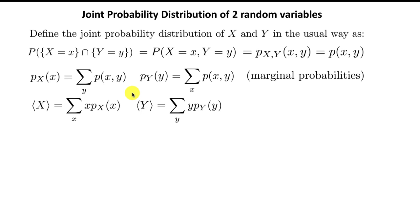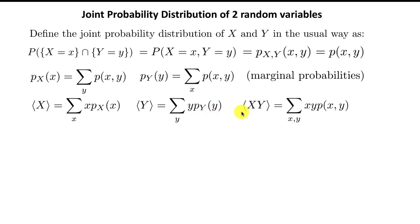We call P_X(x) and P_Y(y) marginal probabilities, because they derive from the joint probability distribution. The expectation value of X is calculated using only P_X(x), and the expectation value of Y using only P_Y(y). But what if you need the expectation value of X times Y? That means X·Y weighted by the joint probability distribution P(x,y) — and this is the obvious way of defining the average value of XY.